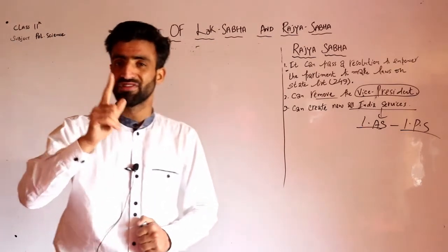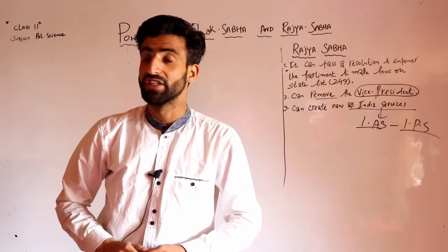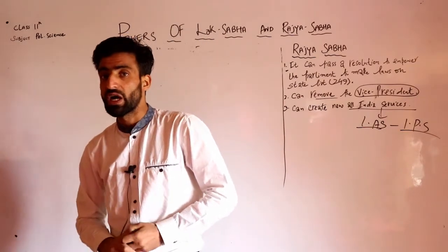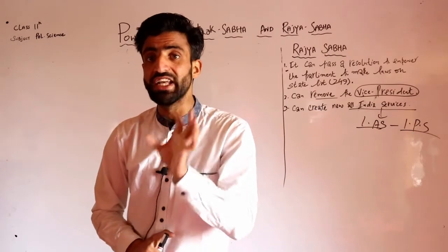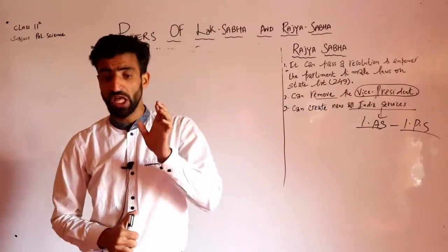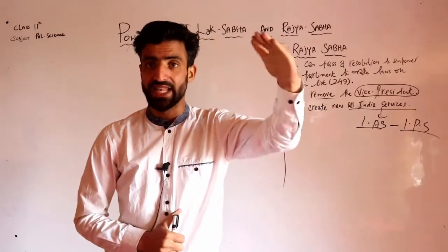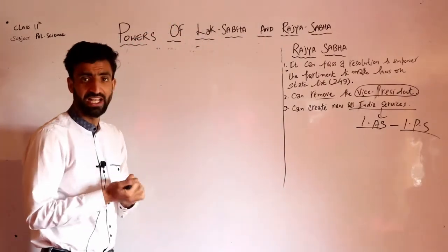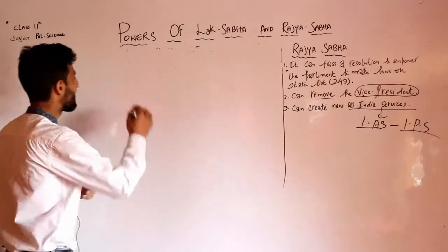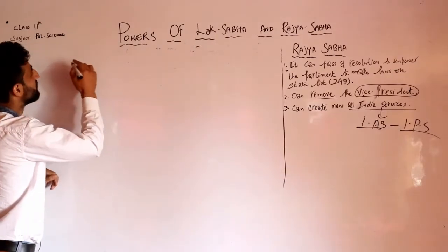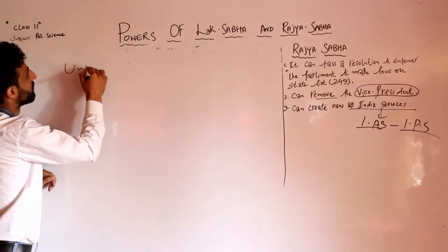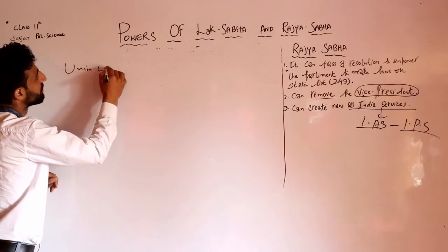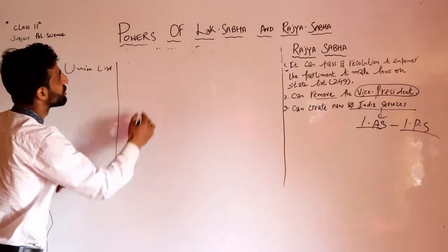When we were discussing the Seventh Schedule of the Constitution - Seventh Schedule deals with the division of powers between centre and state. Seventh Schedule mein teen lists hain: ek hai Union List, doosra hai State List, aur teesra hai Concurrent List.